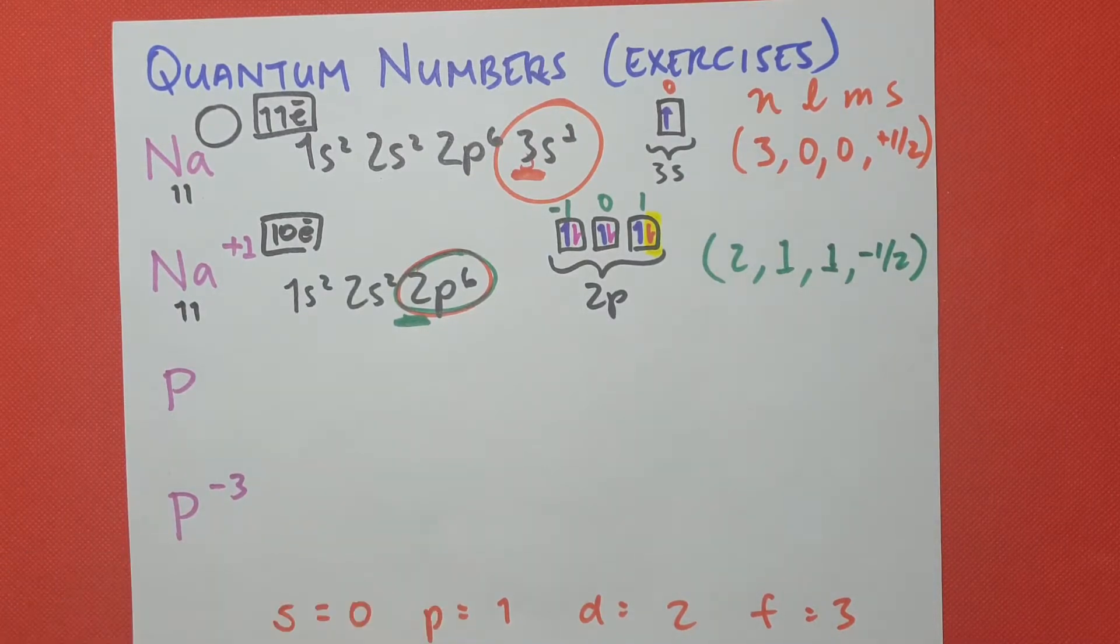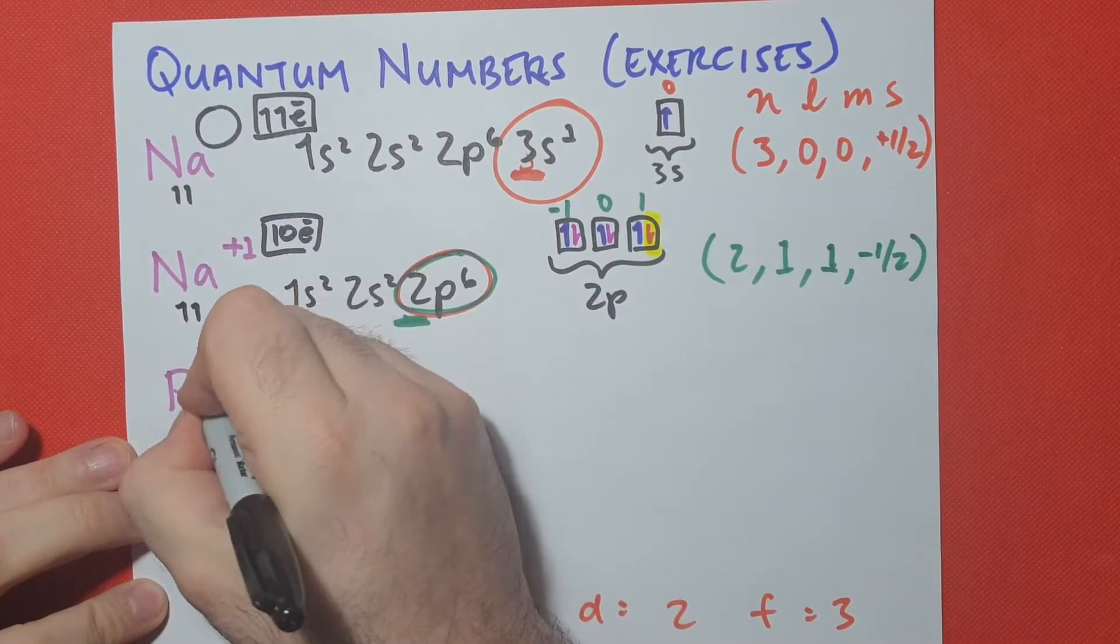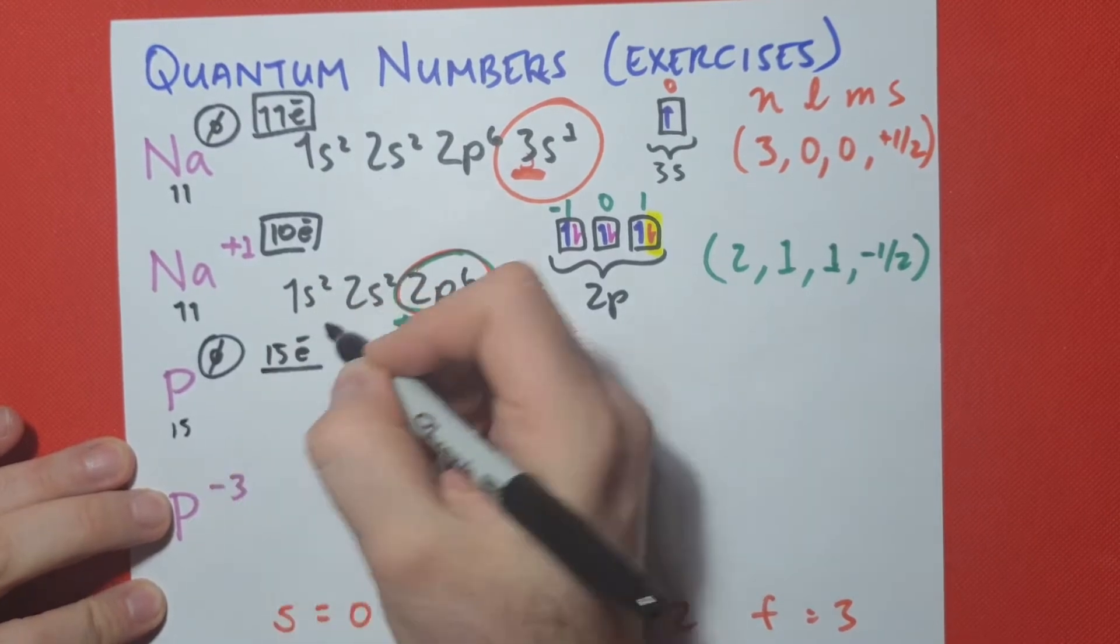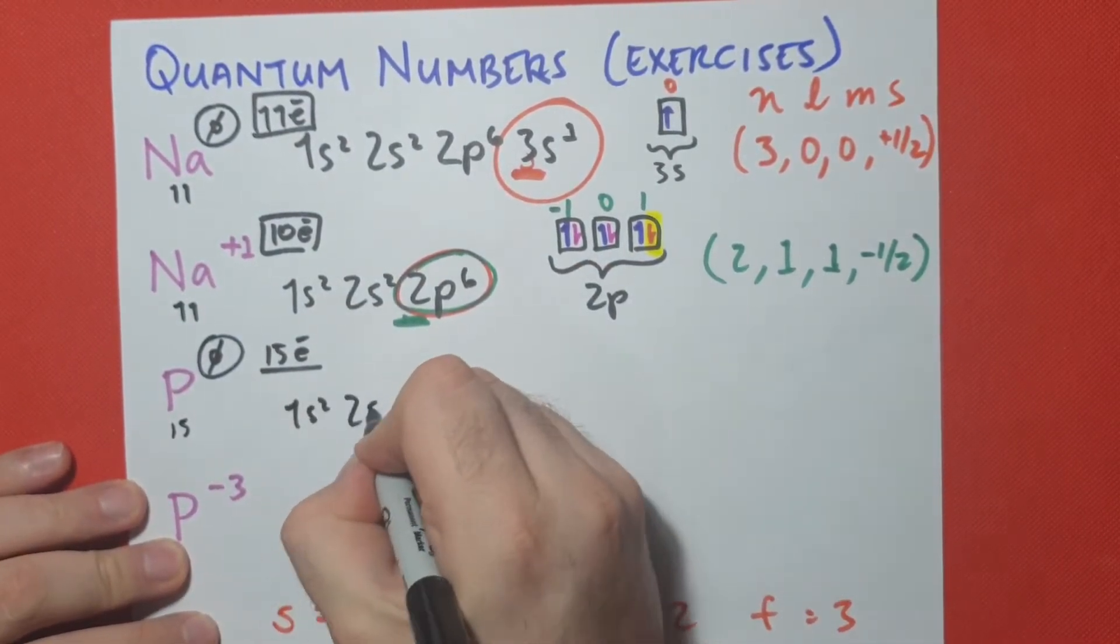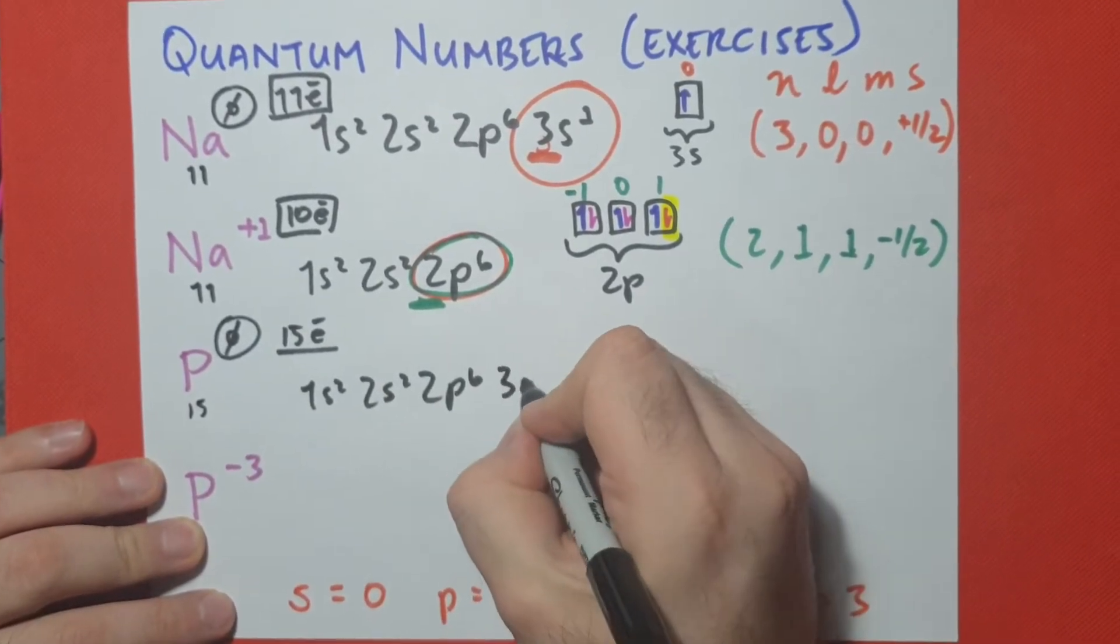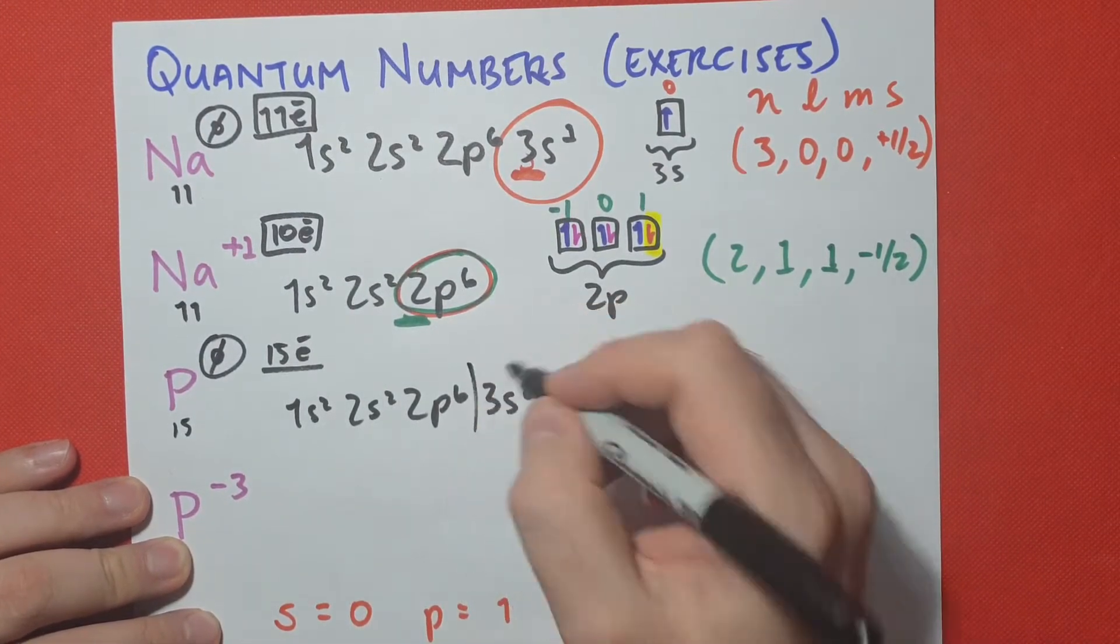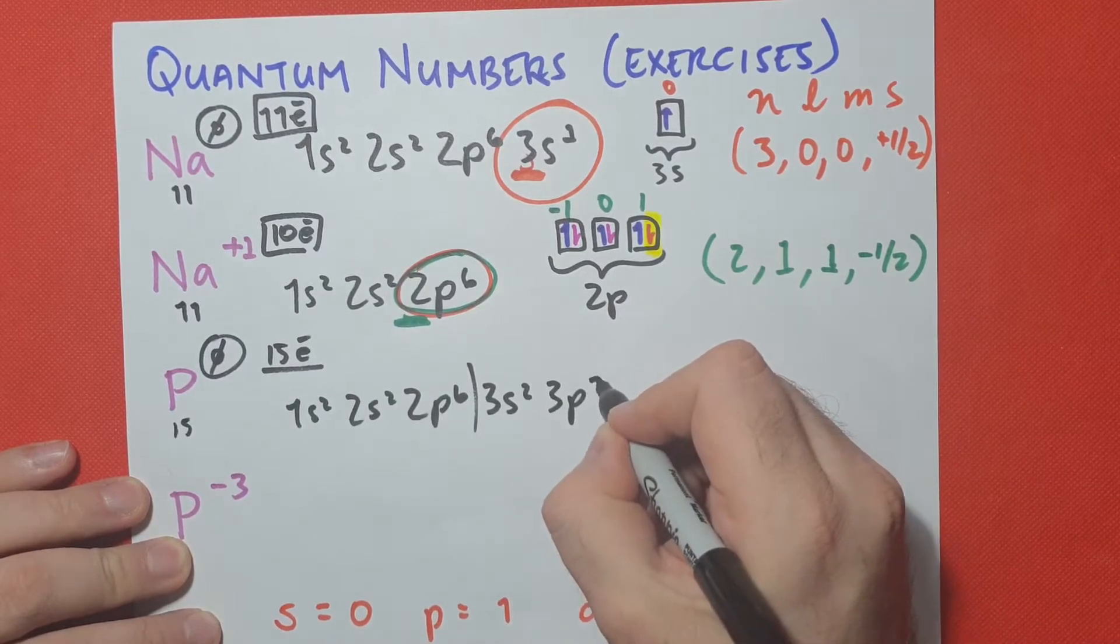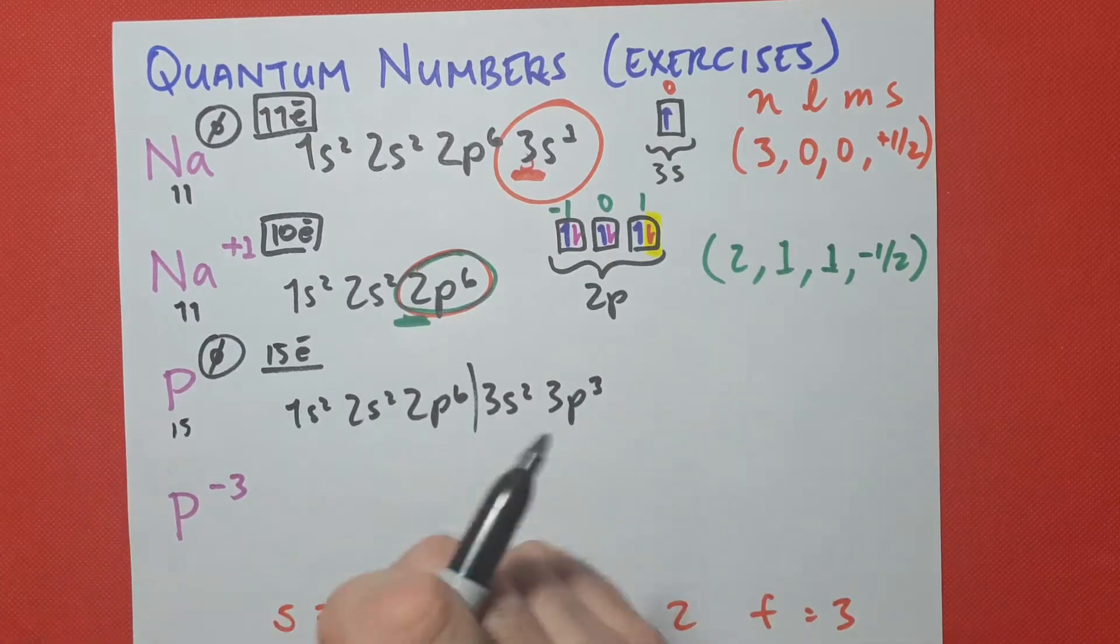Let's go for phosphorus. Phosphorus has atomic number 15 in its neutral form. It also has to have 15 electrons. So let's do that electron configuration. 1s2, 2s2, 2p6. And then we have 3s2. This is 12 electrons, because up to here we had 10. And then we have 3p3, because 10 plus 2, 12 plus 3, 15.